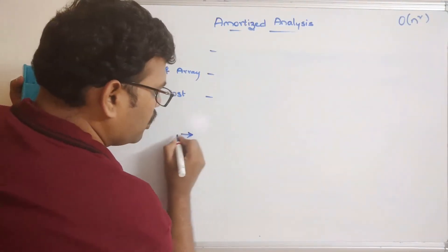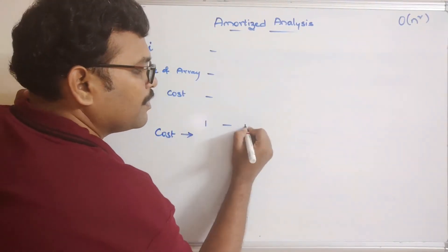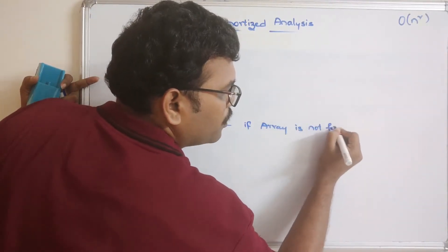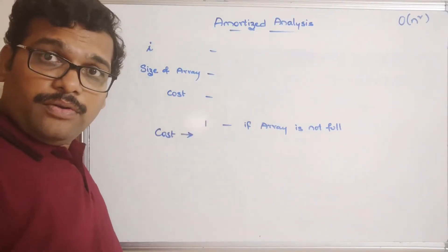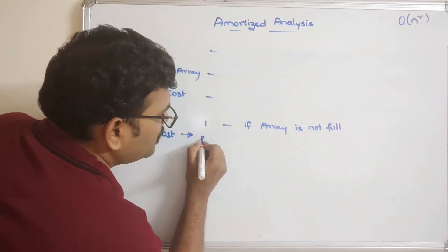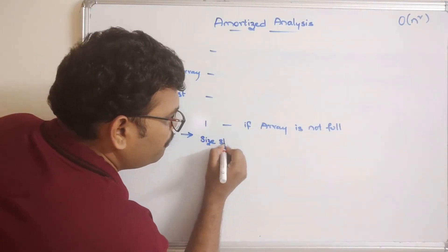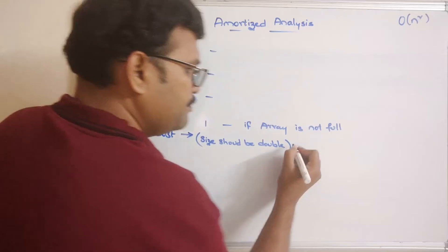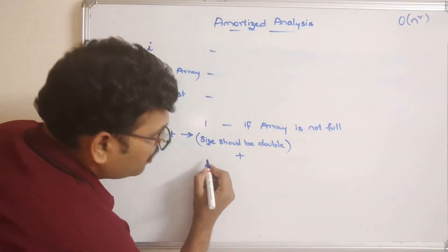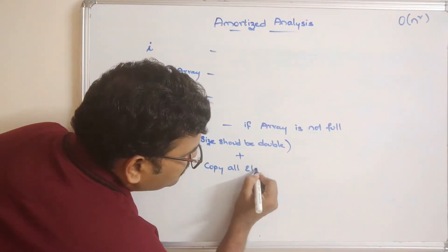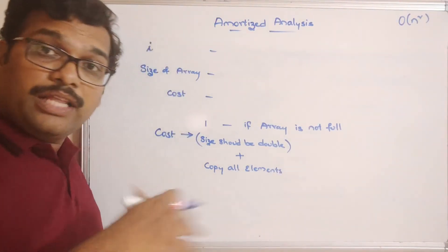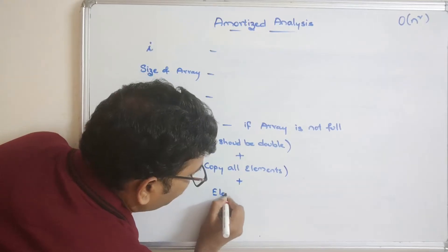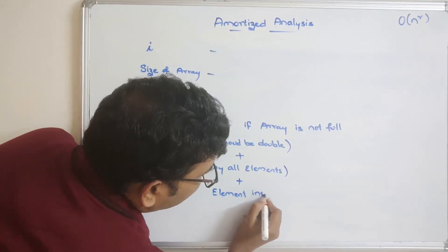Let's set up the cost table with columns: insertion number, size of array, and cost. The cost is 1 if the array is not full. If the array is full, three things happen: the size should be doubled, all elements copied, and the new element inserted. We will trace element by element — when inserting element 1 into an empty array of size 1, if it is full the size doubles to 2.